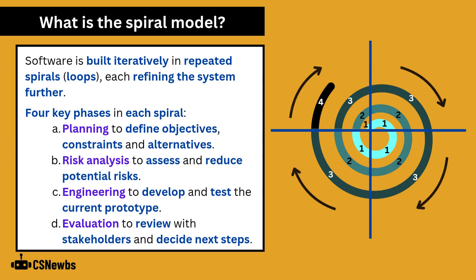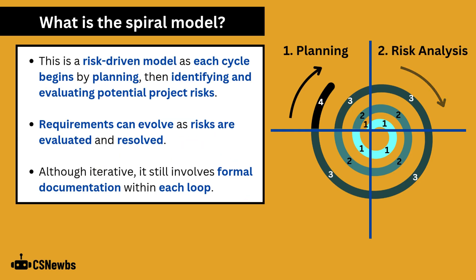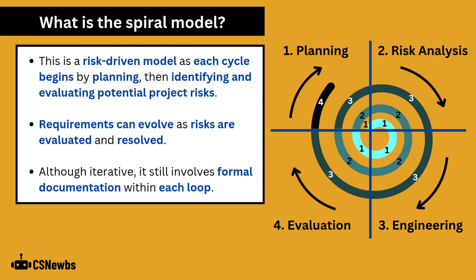There are four key phases in each spiral. First is planning to define objectives, constraints and alternatives, then risk analysis to assess and reduce potential risks, then engineering to develop and test the current prototype, and finally evaluation to review with stakeholders and decide the next steps for the next spiral.